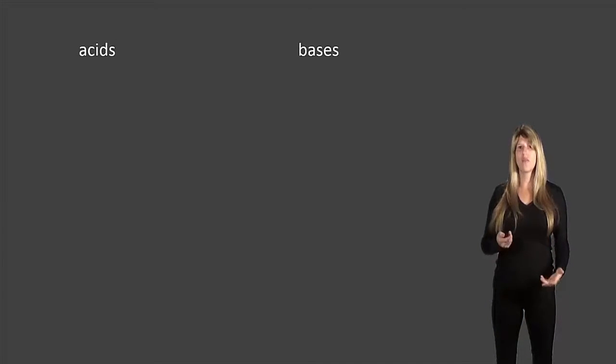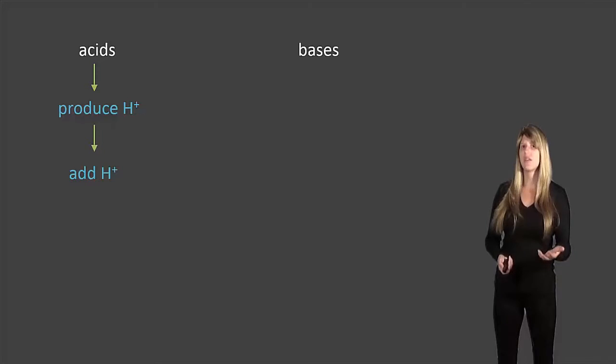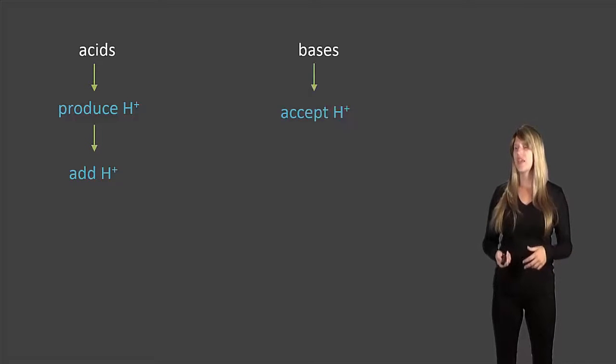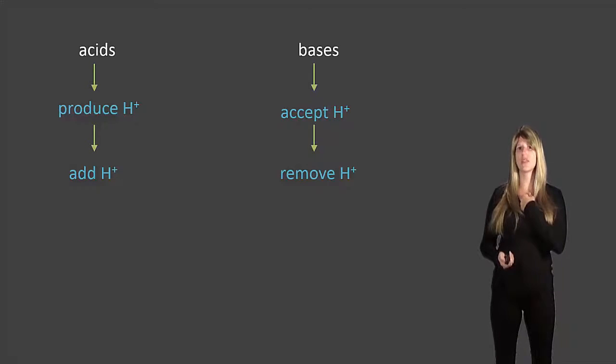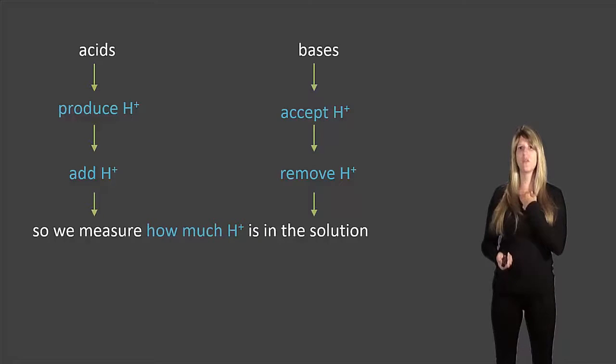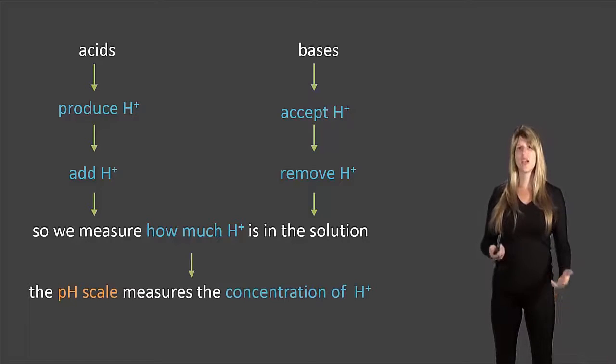So let's take a look now at how we would measure acids and bases. We said that acids produce protons or H+ ions. So that means they're adding protons to water. Bases accept protons, which means they're removing them from water. So how could we measure whether something's acidic or basic? Well, we just measure how many protons or what the concentration of protons is in that substance. And that's actually what the pH scale is all about. It measures the concentration of protons in the substance.